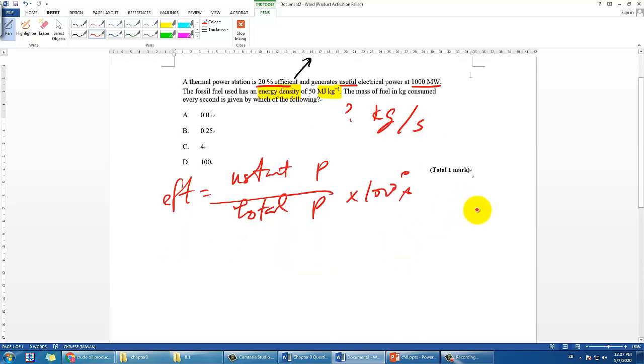The question asks for mass of fuel consumed every second - how many kg per second is consumed. The first thing you want to do is write down the equation for efficiency. Efficiency equals useful power output over total power times 100. So 20% equals useful, that's 1000 megawatts, over the input. The input should have units of joules, but this is per kg. Let's call this x.